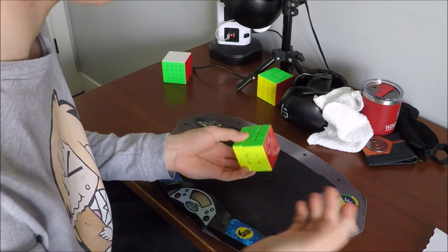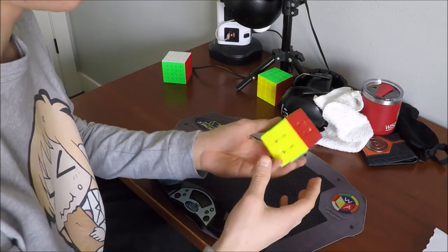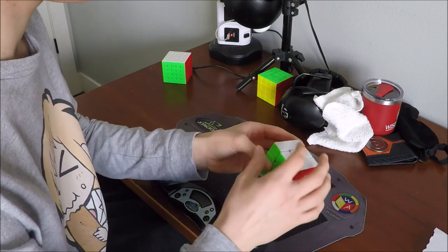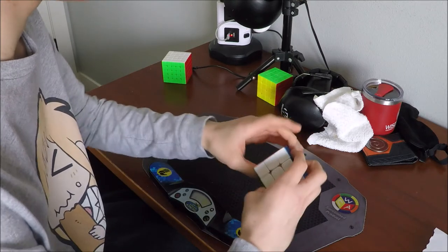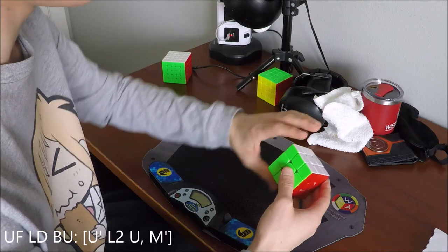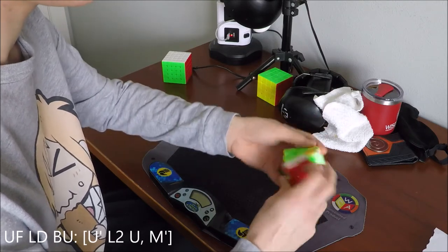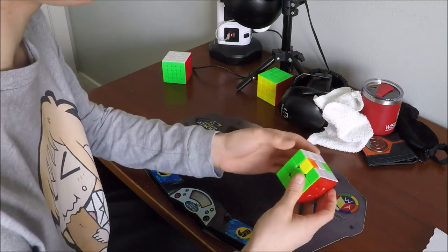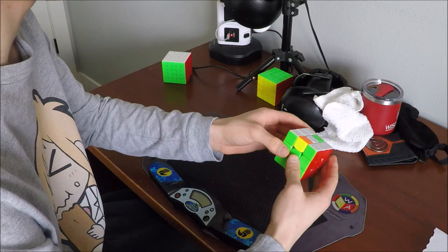And then another algorithm that we were talking about in blind support group that I realized you can use this finger trick for is UF to LD to BU. So, the algorithm I use right now, you have to do a re-grip, and then you do that. And that's pretty good, I think, but this algorithm is definitely better if you just do this.